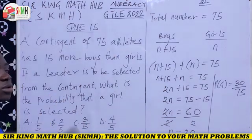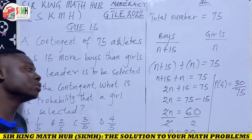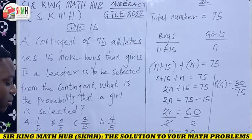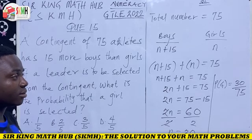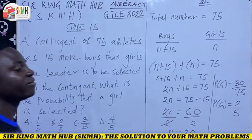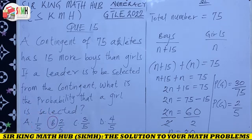Since fractions must always be in their simplest form, we use the calculator to reduce 30 out of 75. Keying it in and pressing equals gives us 2 out of 5. So the probability of selecting a girl as a leader is 2 out of 5. The correct answer is option B. Thanks for watching.